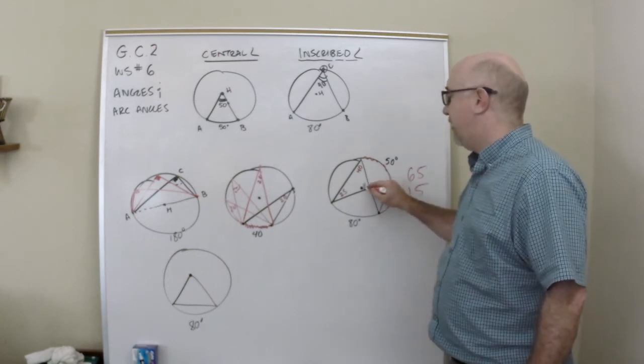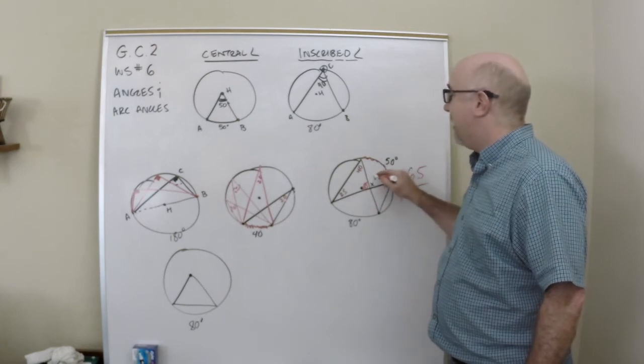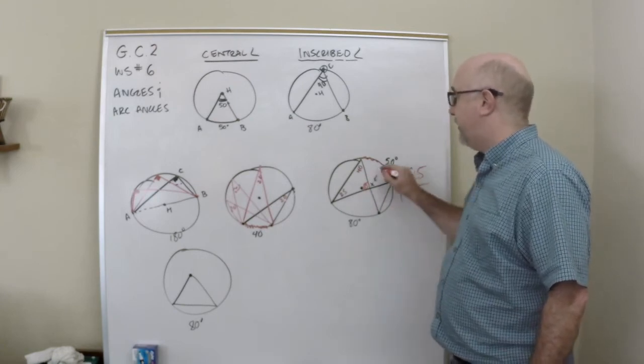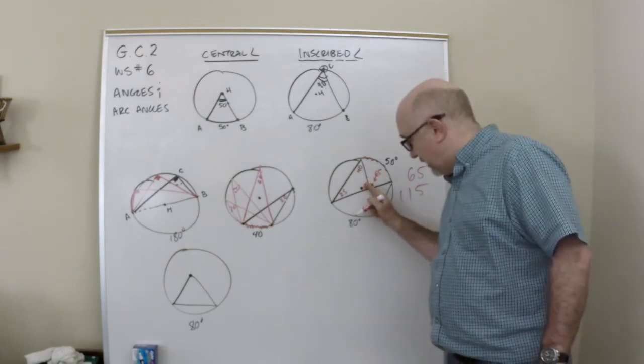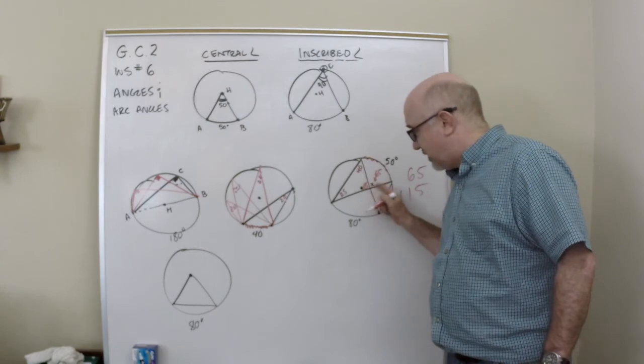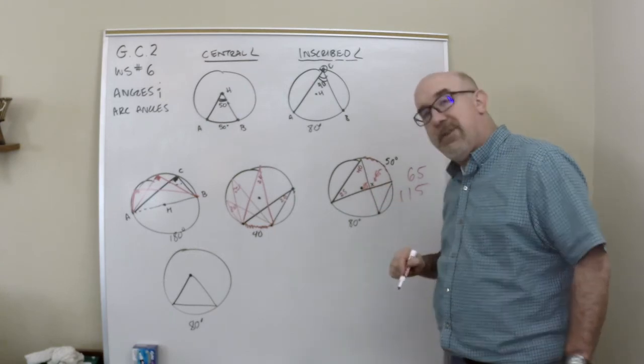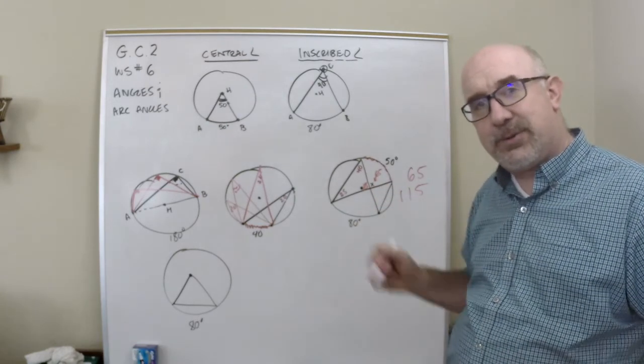And so this would be 115 in this corner. And that leaves me with 65 right there as my value, because these are a linear pair here and they add to 180. If you know the exterior angle theorem, that would also work in there too.